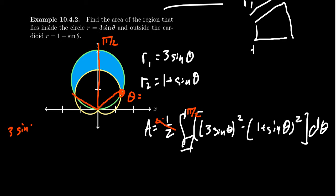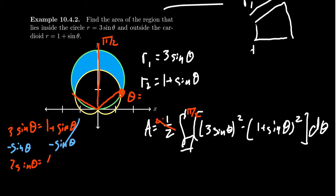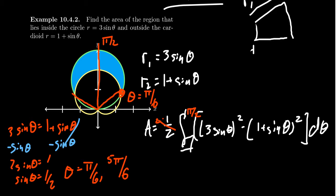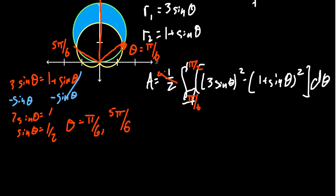To find the lower intersection, we set 3 sine theta equal to 1 plus sine theta. Subtracting sine theta from both sides gives 2 sine theta equals 1, so sine theta equals one-half. Sine equals one-half at pi over 6 and five pi over 6. Pi over 6 is the intersection in the first quadrant. Because of the symmetry argument, we don't need five pi over 6 — we just go from pi over 6 to pi over 2.